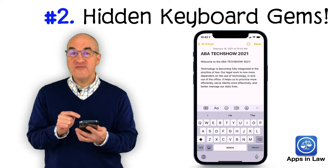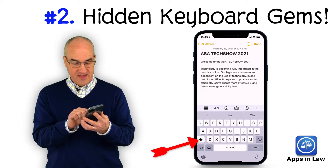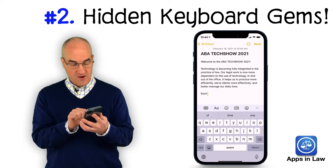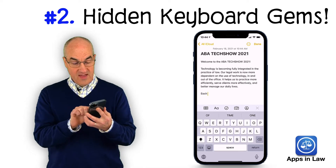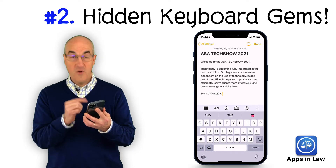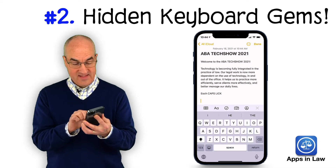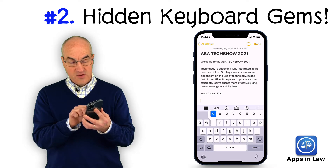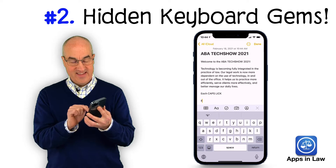There are also a couple of nifty hidden keyboard gems on the iPhone. For example, you know where the shift key is, and at the beginning of each sentence it'll capitalize that first letter, but if you double tap on the shift key you'll notice there's a little line under the arrow and that means you are now in caps lock mode. There are also some hidden accented letters — if you tap and hold on a vowel, you can move your finger over and select an accented letter.